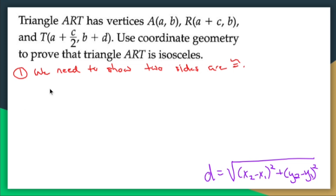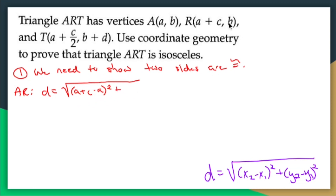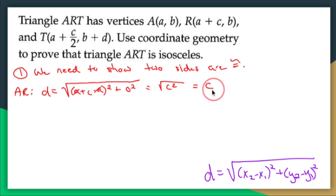I need to find AR, AT, and RT, and hopefully two of them will be equal. Starting with AR: let R be the twos and A be the ones. So (a+c - a)² + (b - b)² = c² + 0 = c². The square root of c² is c. So AR equals c.